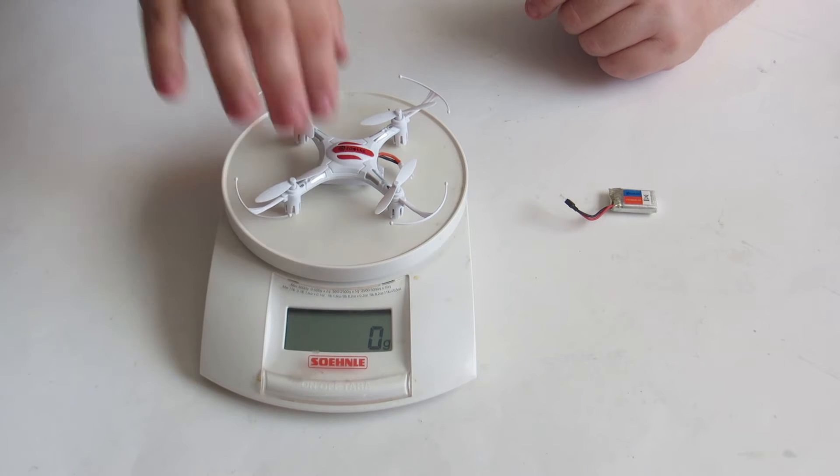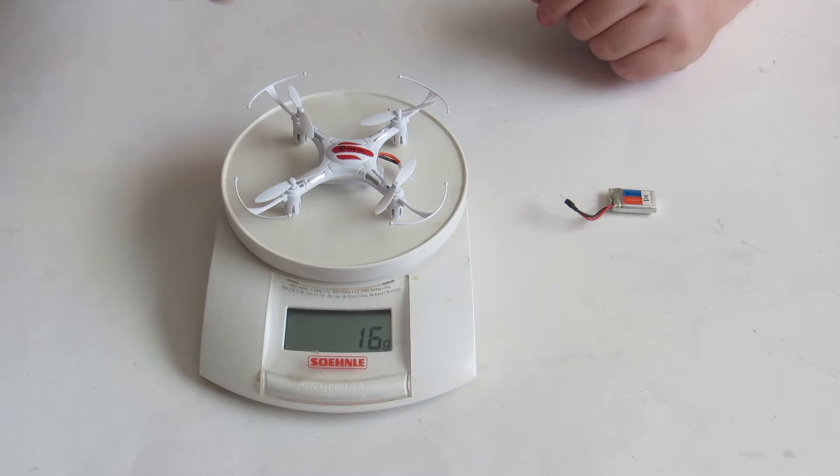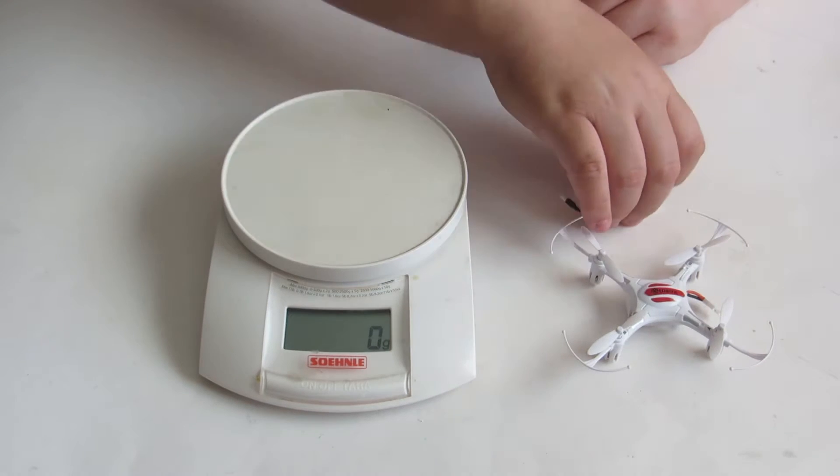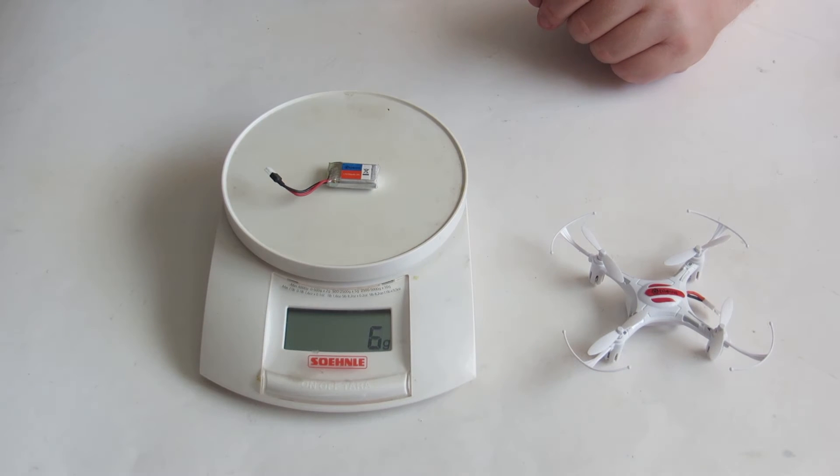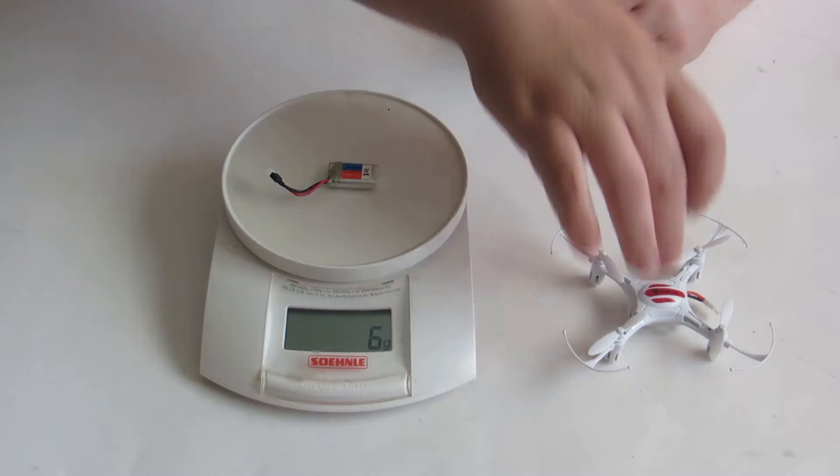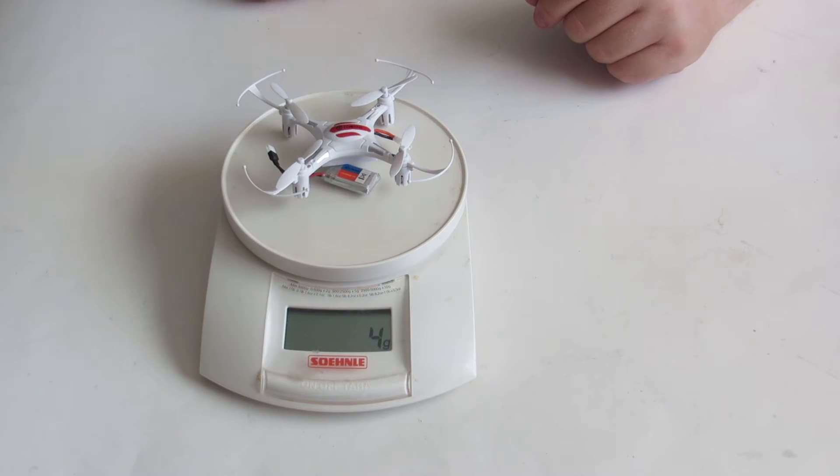Let's check the weight. The quad itself is 16 grams. And the battery is around 6 grams. The scale isn't very precise as you can see from here. Total is 20 grams. Yeah precision.